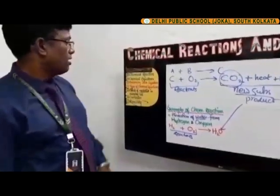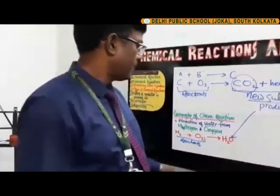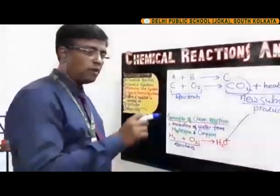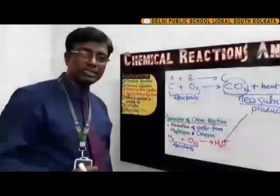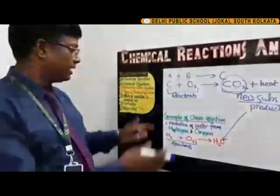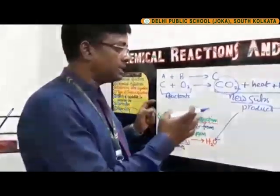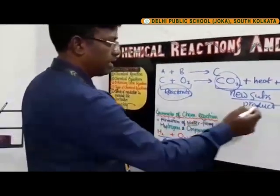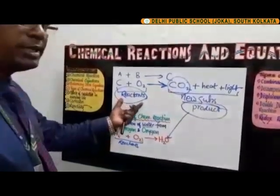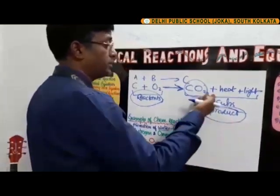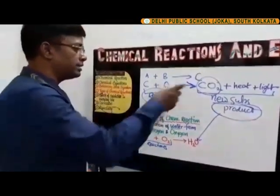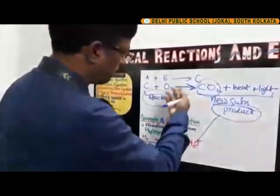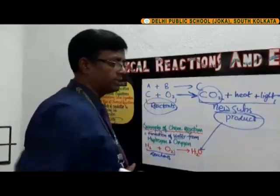Now we come to chemical equations. Chemical equations are the symbolic presentation using symbols and formulas of the participating substances in a reaction. Reactants and products are separated by an arrow — reactants on the left-hand side, products on the right-hand side. The conditions necessary to carry out a reaction — such as temperature, pressure, concentration, or catalyst — are denoted above or below the arrow.